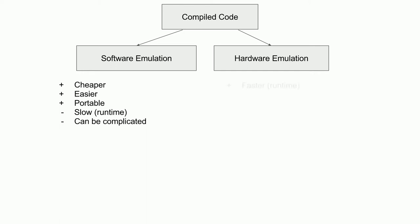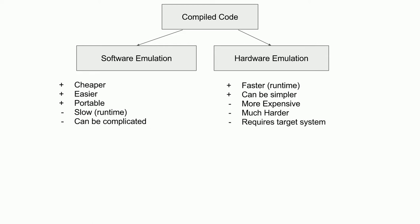For hardware emulators, they are often much faster than software emulators, because they can directly implement the original hardware. They can be simpler — for example, in the case of the Game Boy Advance, putting a Z80 on the main chip was simpler than trying to program a Z80 emulator to run on the ARM core. They are, however, more expensive, requiring dedicated hardware. They can be much harder to implement, since hardware is harder to debug, and they require a dedicated target system and hardware. This is why most emulation solutions are software-based.